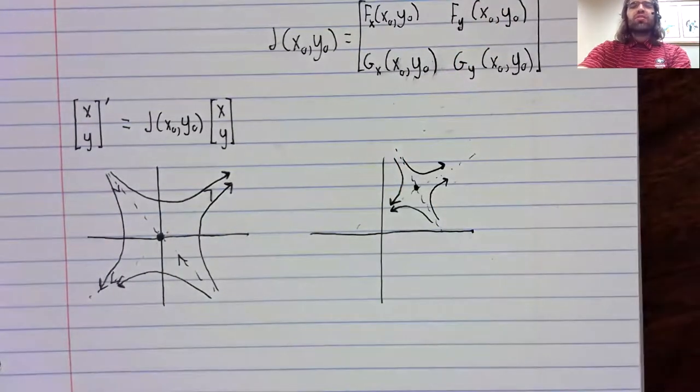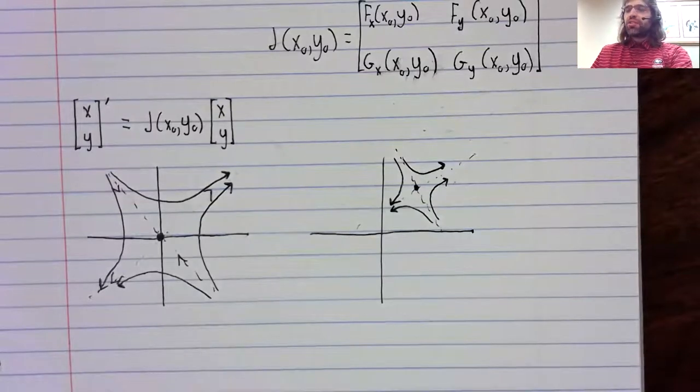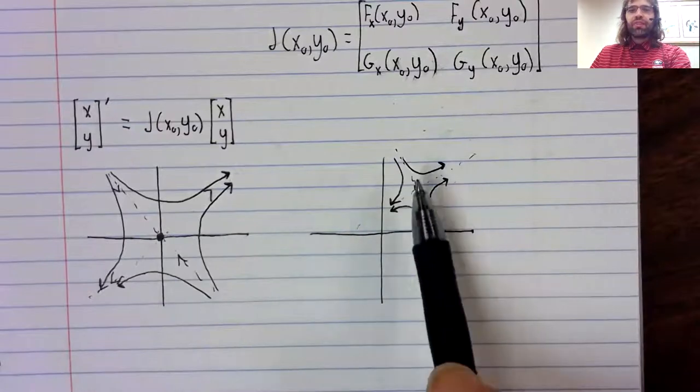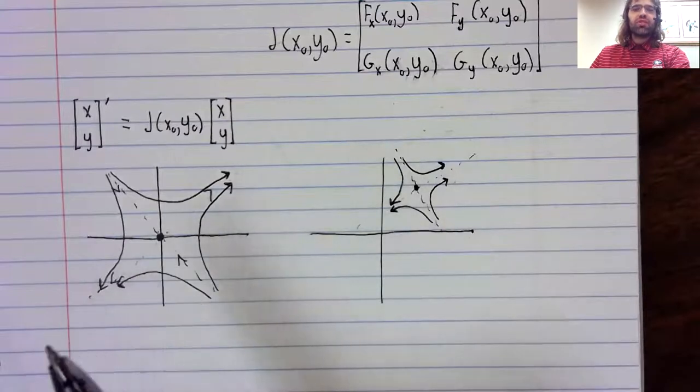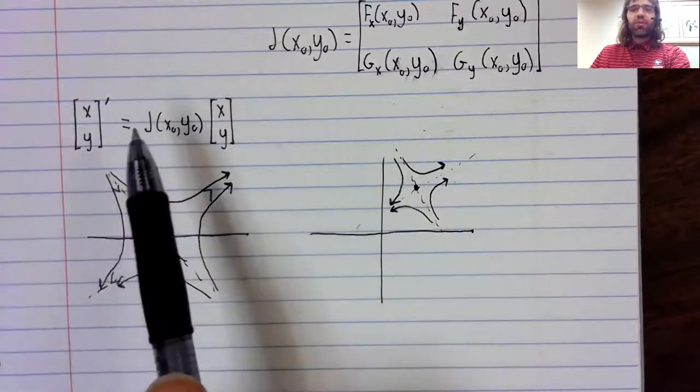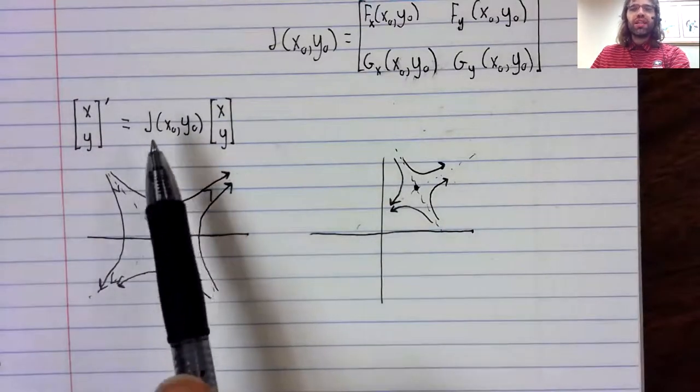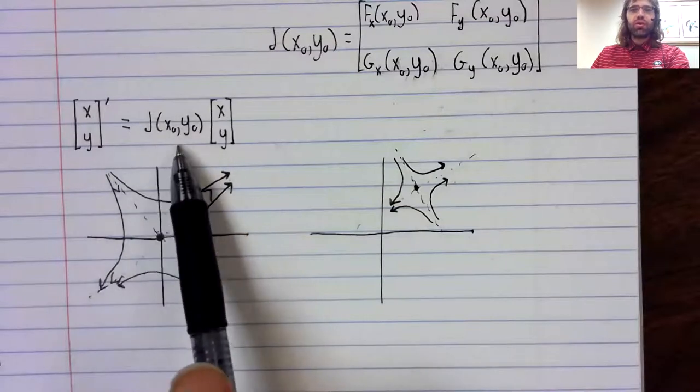So that's the power of the Jacobian. It lets us classify fixed points using the material from the previous unit that we had for linear homogeneous differential equations.